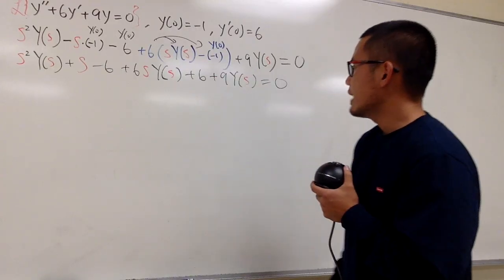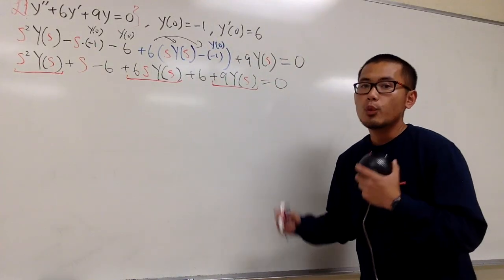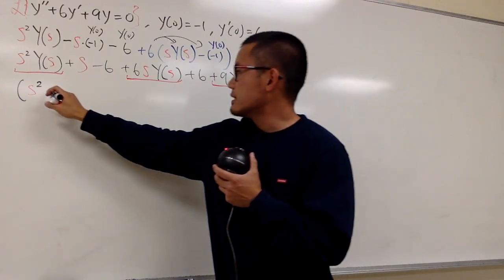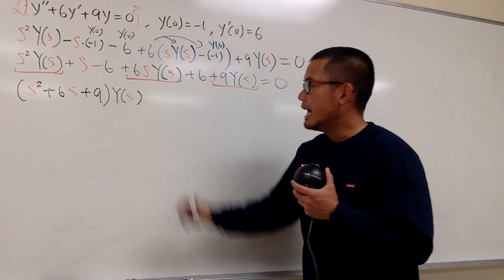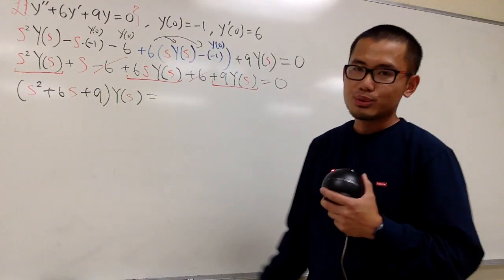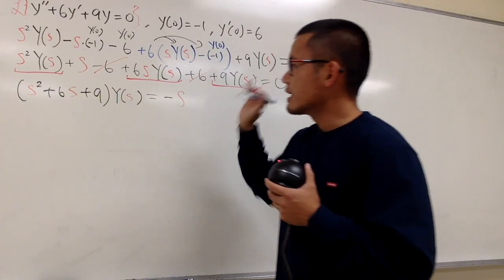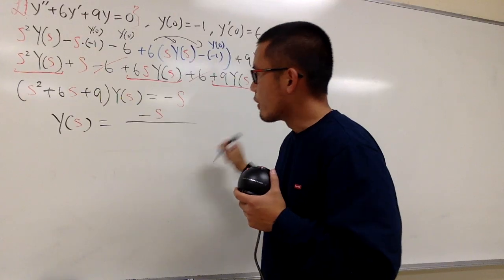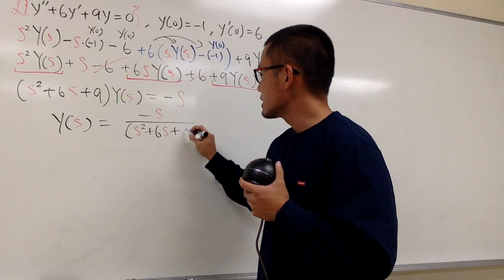Now let's see what we have. Here we have Y(s), and here we also have Y(s), and here we also have Y(s). We will put them together and factor out Y(s). So we have s squared plus 6s plus 9, multiplied by Y(s). We bring everything else to the right-hand side. Notice that the negative 6 and plus 6 cancel each other out, which is excellent. We just bring the s to the right-hand side, so it becomes negative s. At the end, Y(s) equals negative s over s squared plus 6s plus 9.